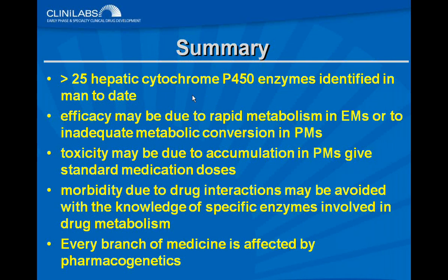Summary slide: there are greater than 25 hepatic cytochrome P450 enzymes identified in humans to date. Efficacy may be due to rapid metabolism in extensive metabolizers, or inadequate metabolic conversion in poor metabolizers. Toxicity may result from drug accumulation in poor metabolizers given standard doses. Morbidity from drug interactions may be avoided with knowledge of specific drug metabolizing enzymes involved. Every branch of medicine is affected by pharmacogenetics and genomics, and we will be hearing much more about this, particularly in drug development.